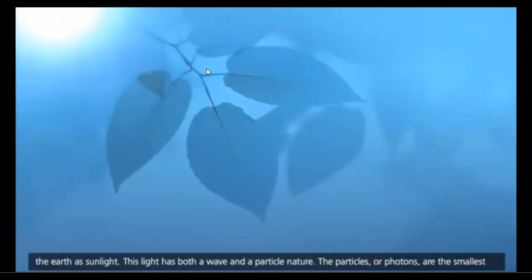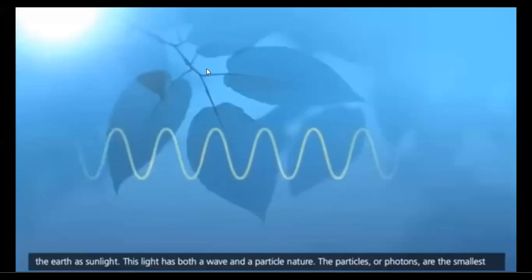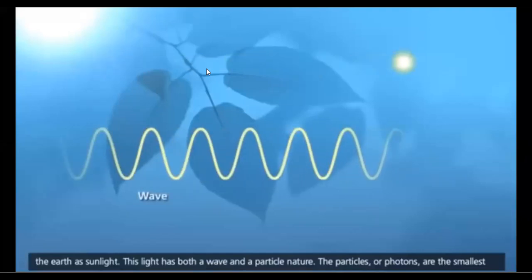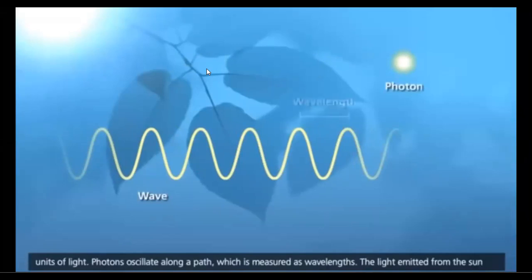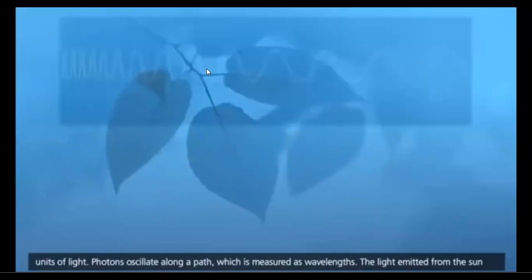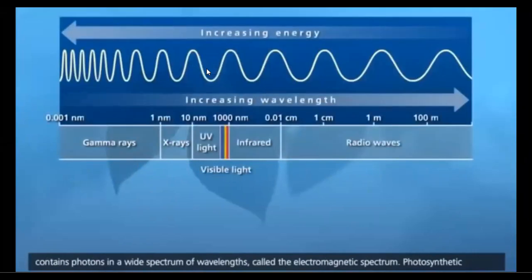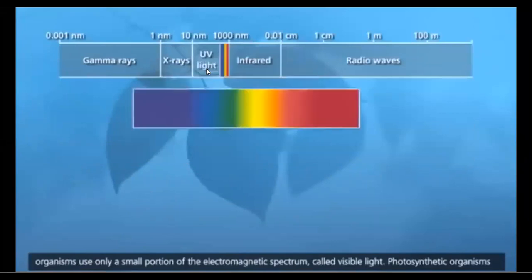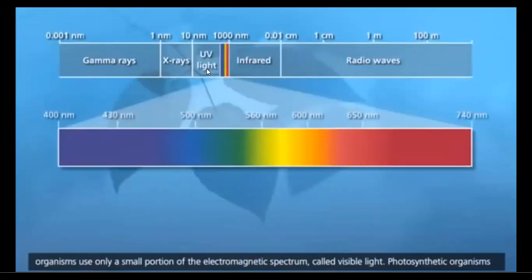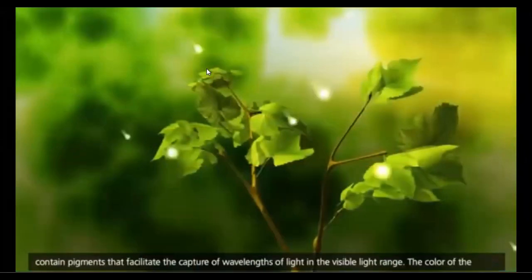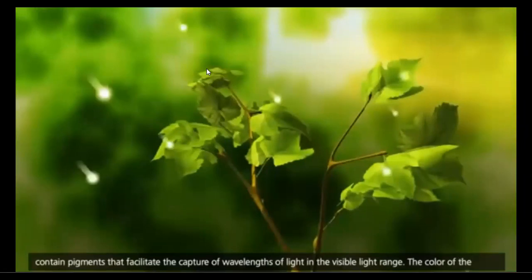This light has both a wave and a particle nature. The particles, or photons, are the smallest units of light. Photons oscillate along a path which is measured as wavelengths. The light emitted from the sun contains photons in a wide spectrum of wavelengths called the electromagnetic spectrum. Photosynthetic organisms use only a small portion of the electromagnetic spectrum, called visible light.